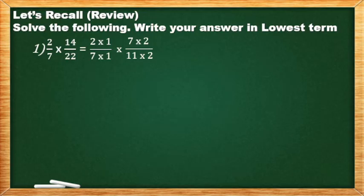Once you set prime factors, dapat yung mga numbers na gagamitin natin ay prime numbers. Halimbawa, 2, 3, 5, 7, 11, 13, 17, 19, 23, and so on.